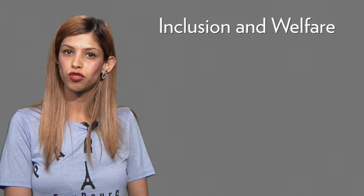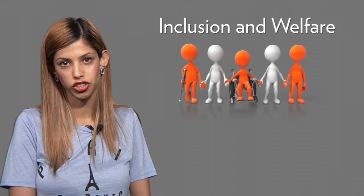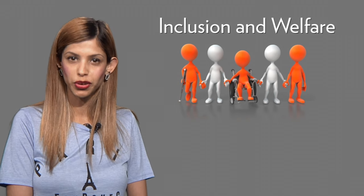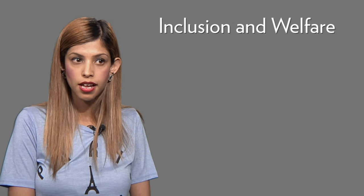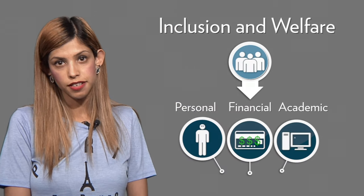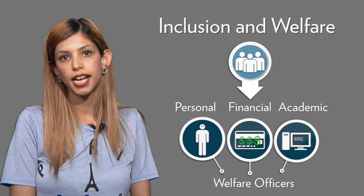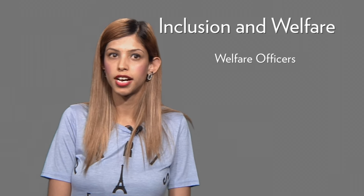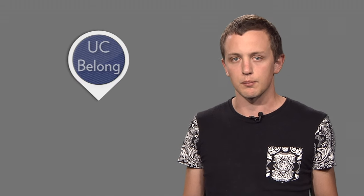Inclusion and Welfare provide support for students with disability or ongoing health conditions and general welfare for all students. If you have an ongoing health condition, we'd recommend you make an appointment with an inclusion advisor. If you are experiencing personal, financial or academic difficulties, the welfare officers are a great starting point to seek advice, referral and support. The welfare officers also provide advice on grievances and misconduct matters, and run a range of specialised support programs such as UC Belong — a program delivering events for newly commencing students.